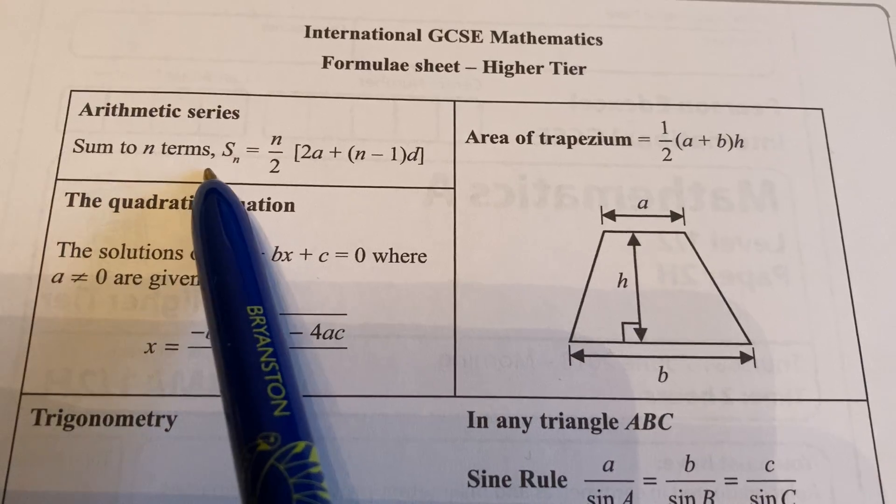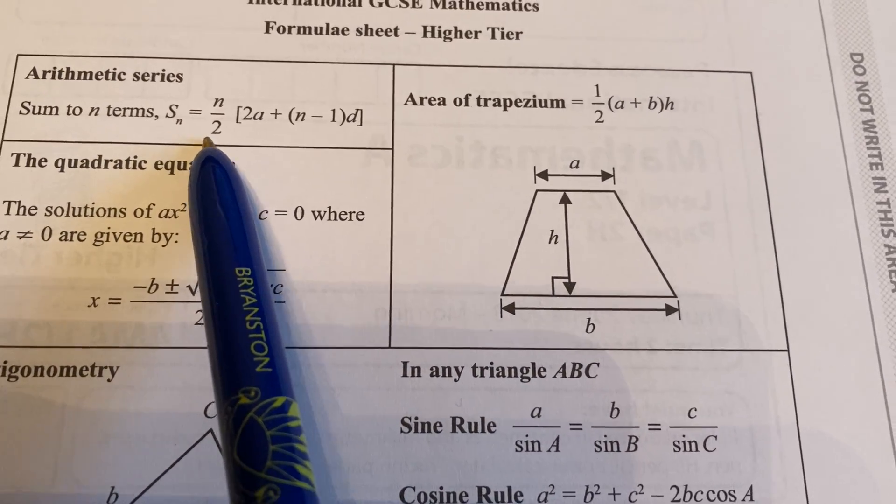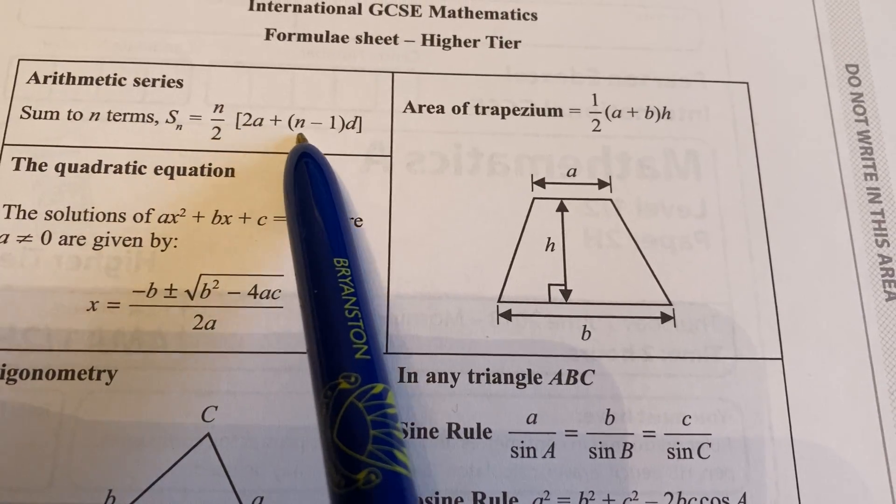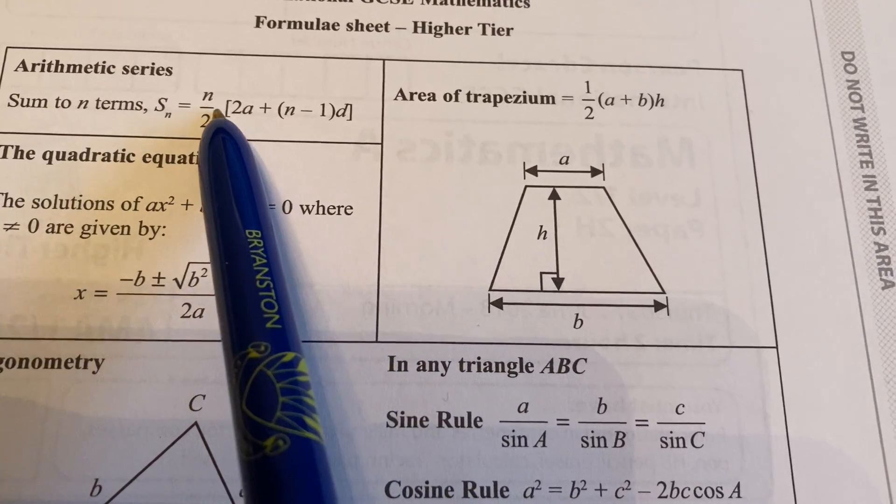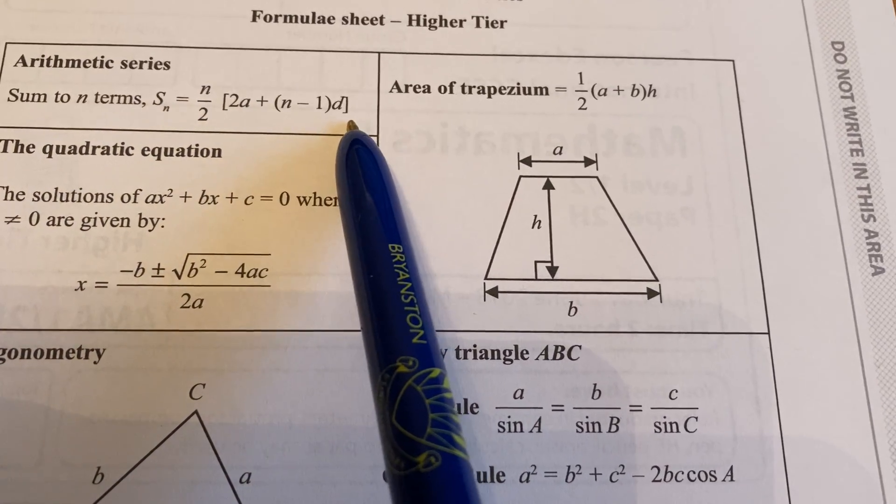The sum to however many terms, n terms, is given by this formula here. So n over 2, 2a plus n minus 1d. n is the number of terms, a is the first number, d is the difference.